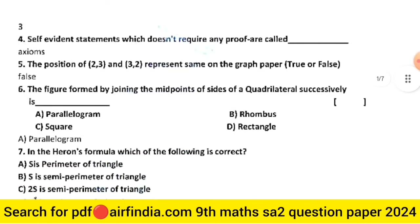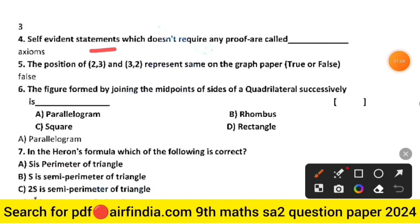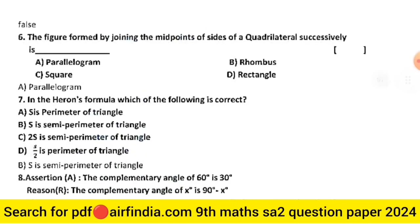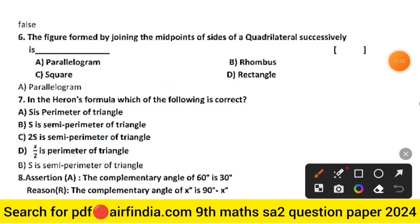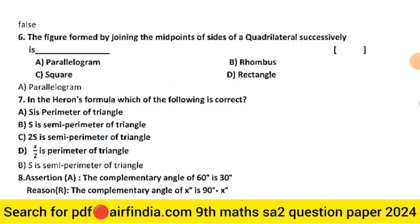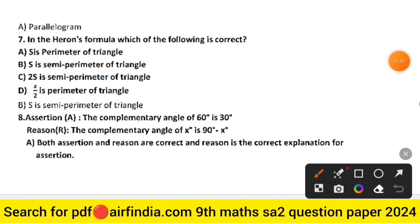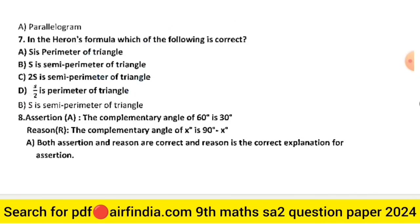Question 4: self-evident statements which don't require any proof are called axioms — axioms is the right answer. Question 5: the position of (2,3) and (3,2) representing the same on the graph paper — the right answer is false. Question 6: the figure formed by joining the midpoints of sides of a quadrilateral successively — the right answer is option A, parallelogram.